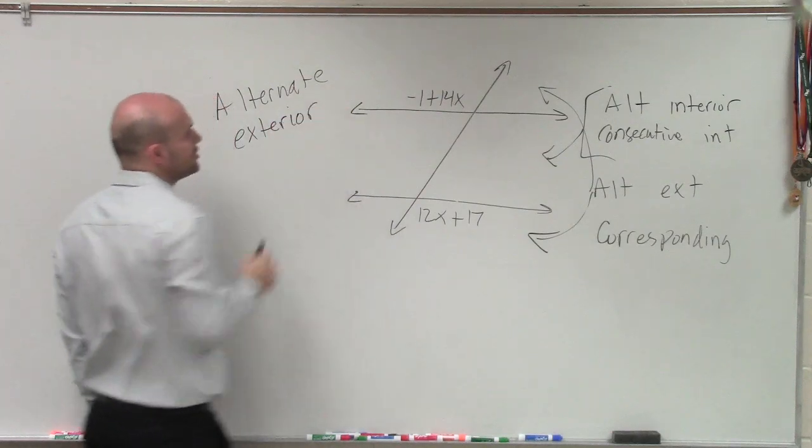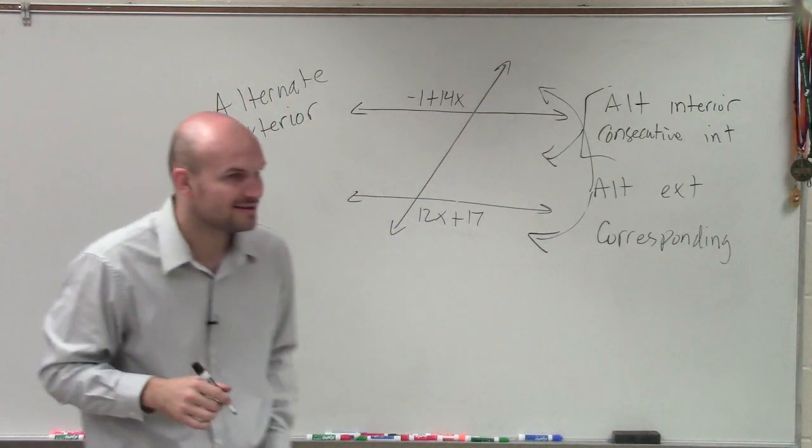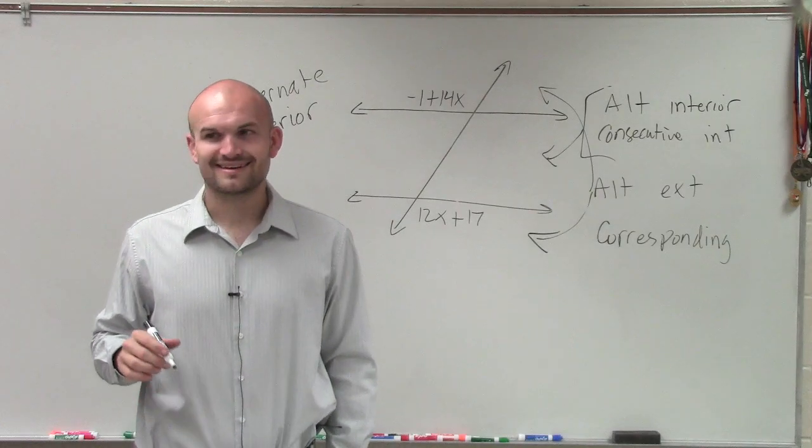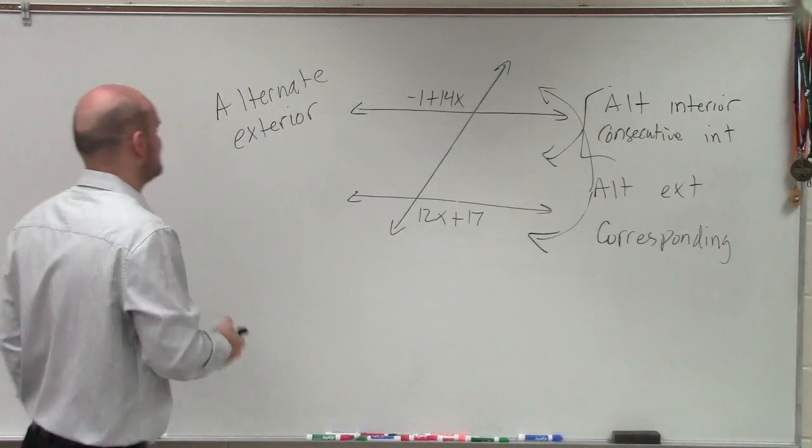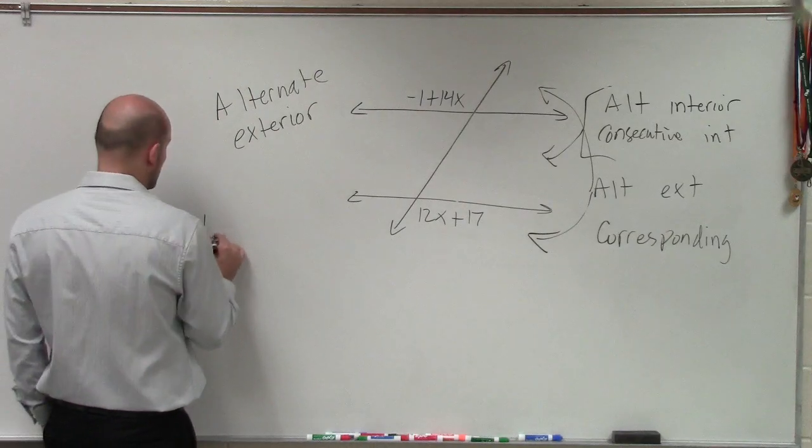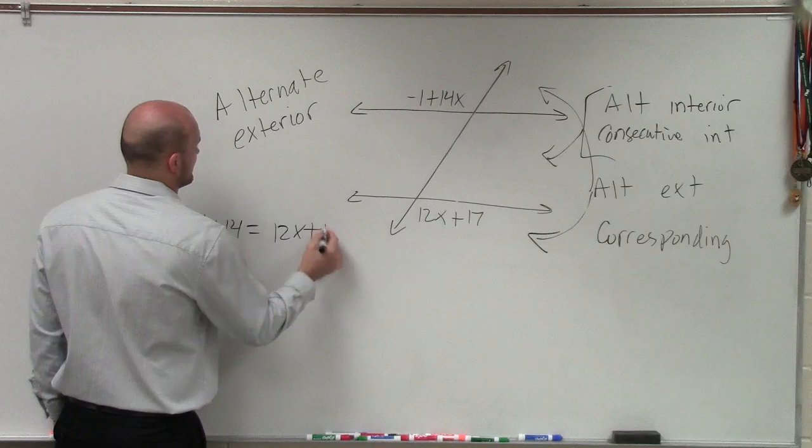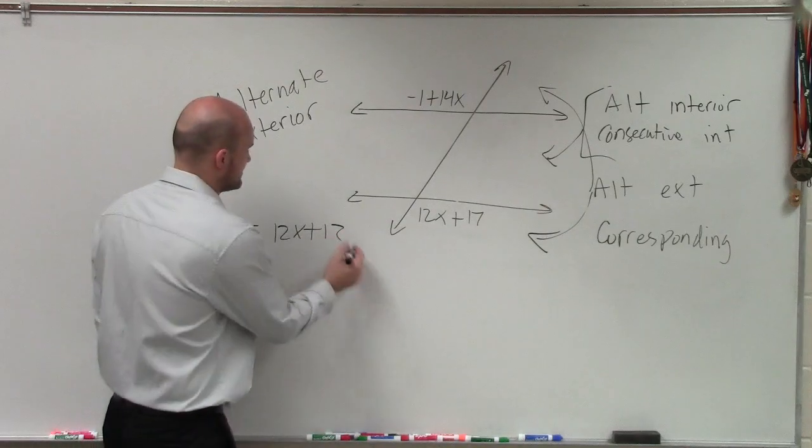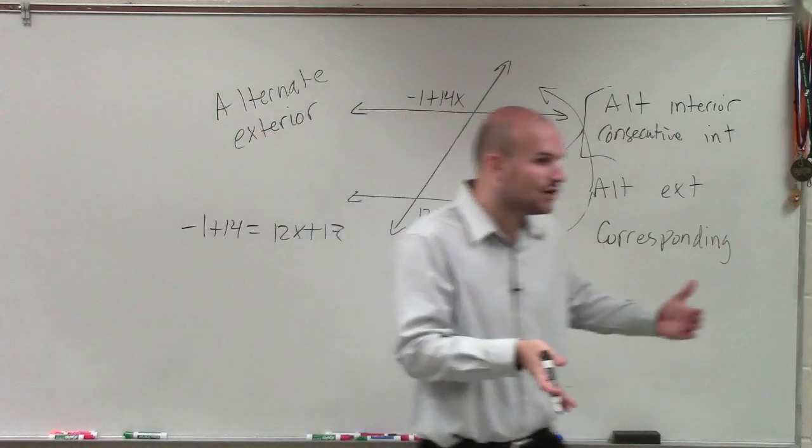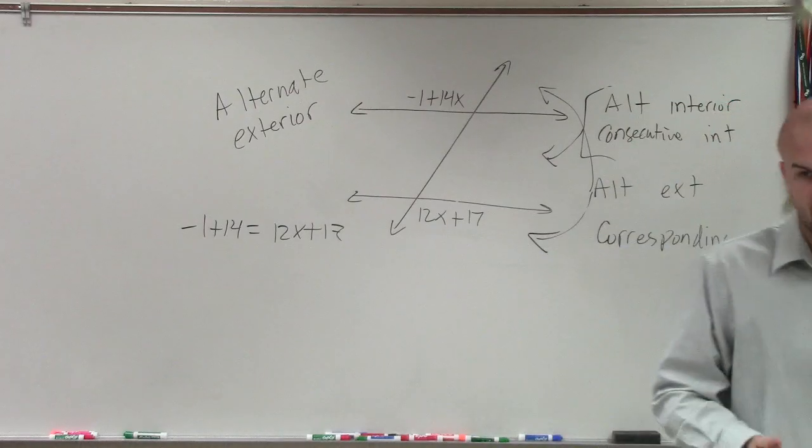And we know that alternate exterior are what? Equal to 180? No. Equal to each other. So, therefore, we can write an equation that's set up like that. One angle is equal to the other angle.